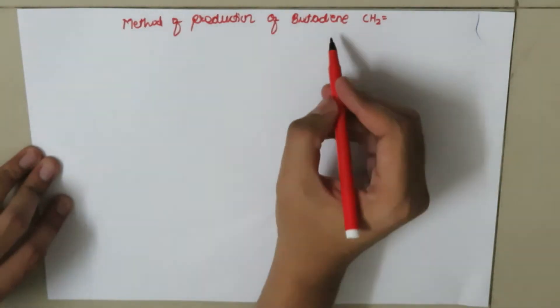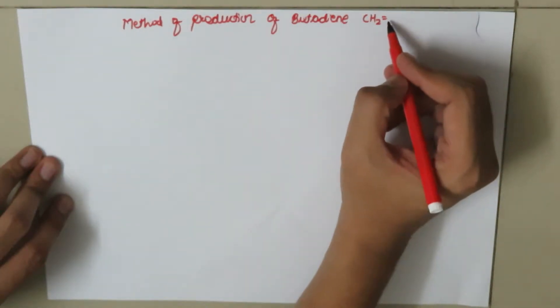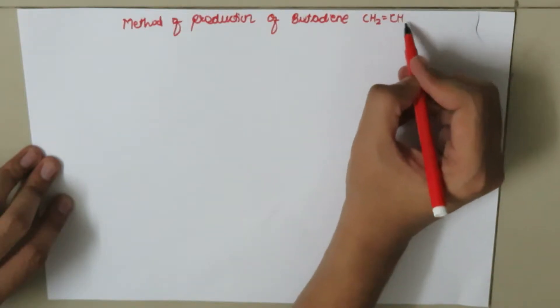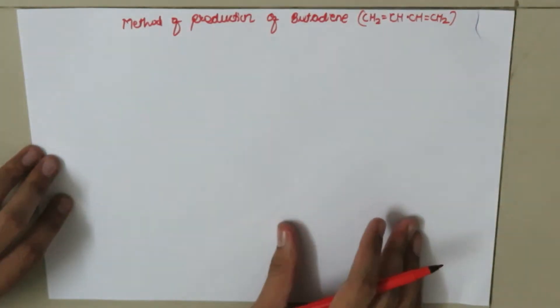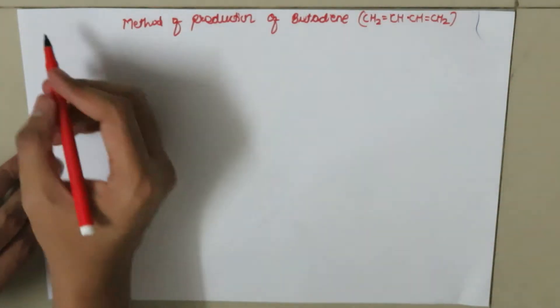The method of production of butadiene, which is also called CH2=CH-CH=CH2. Basically, there are three methods for the production of butadiene.